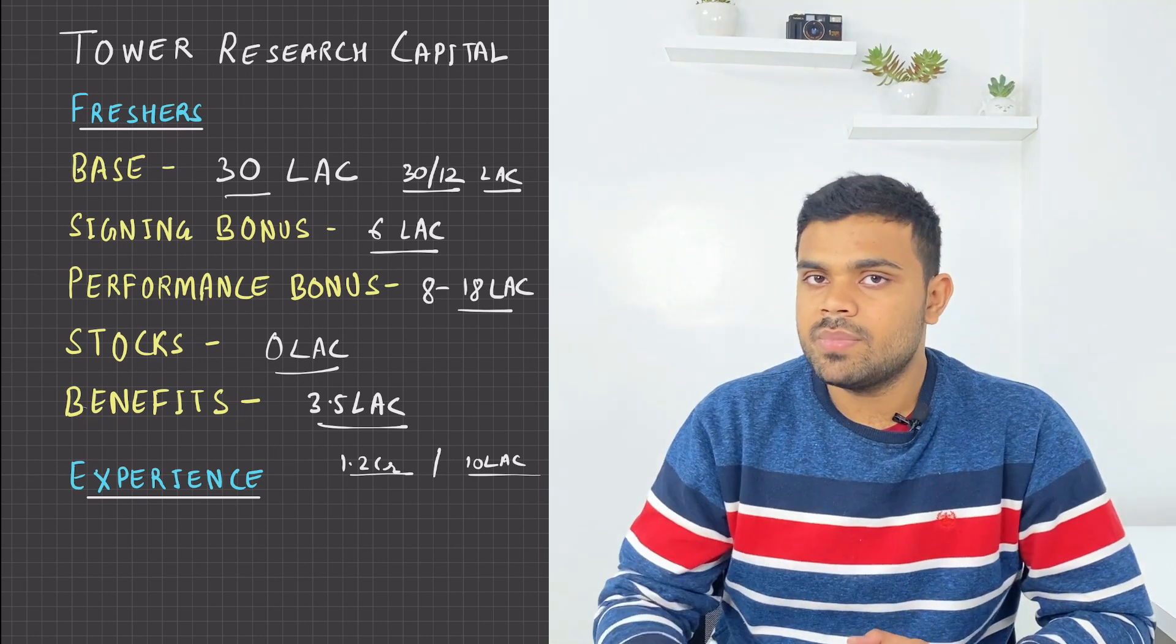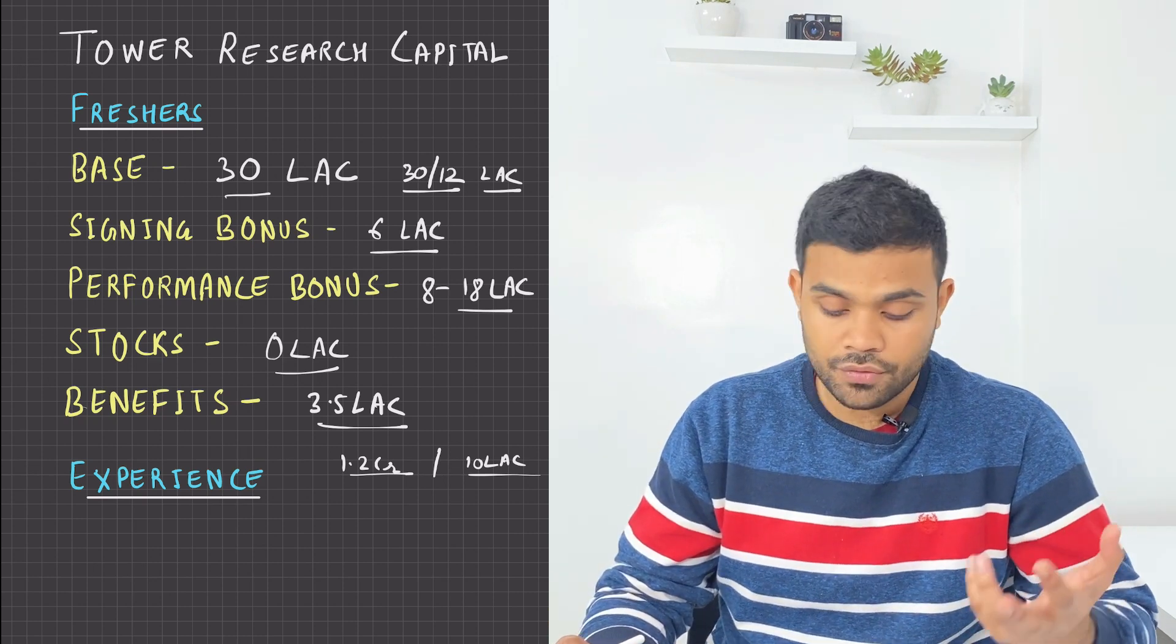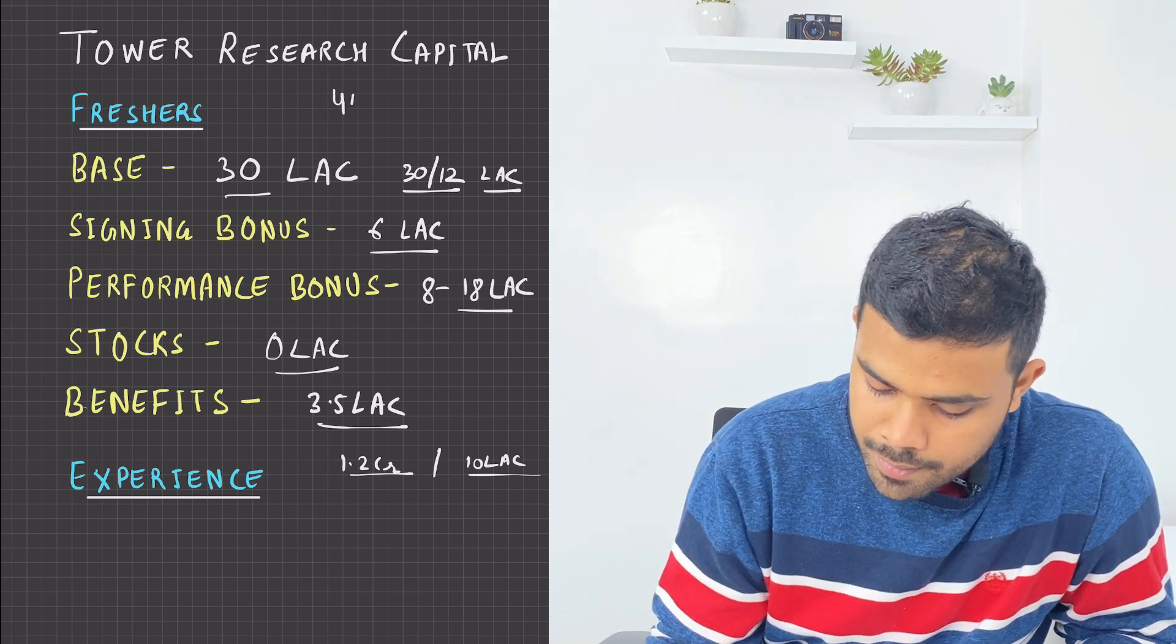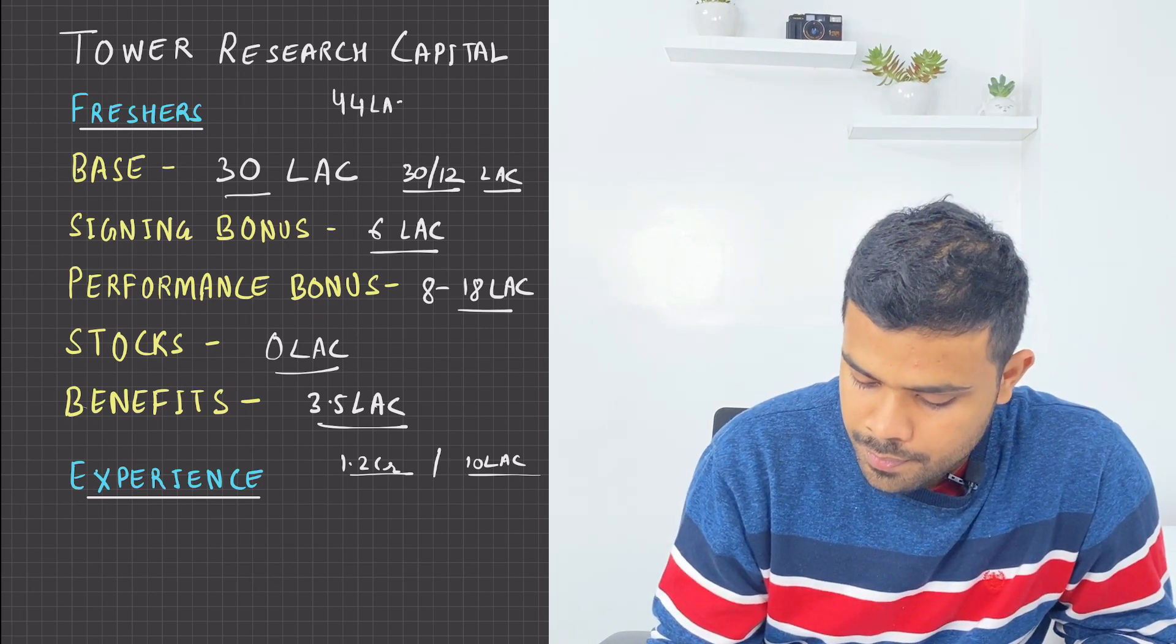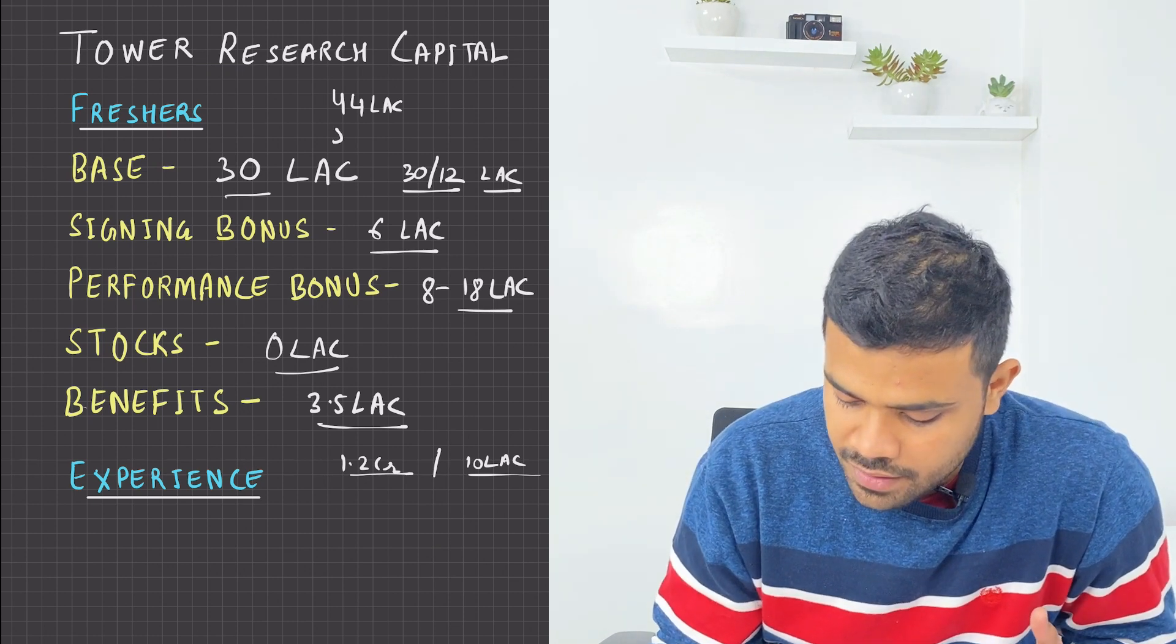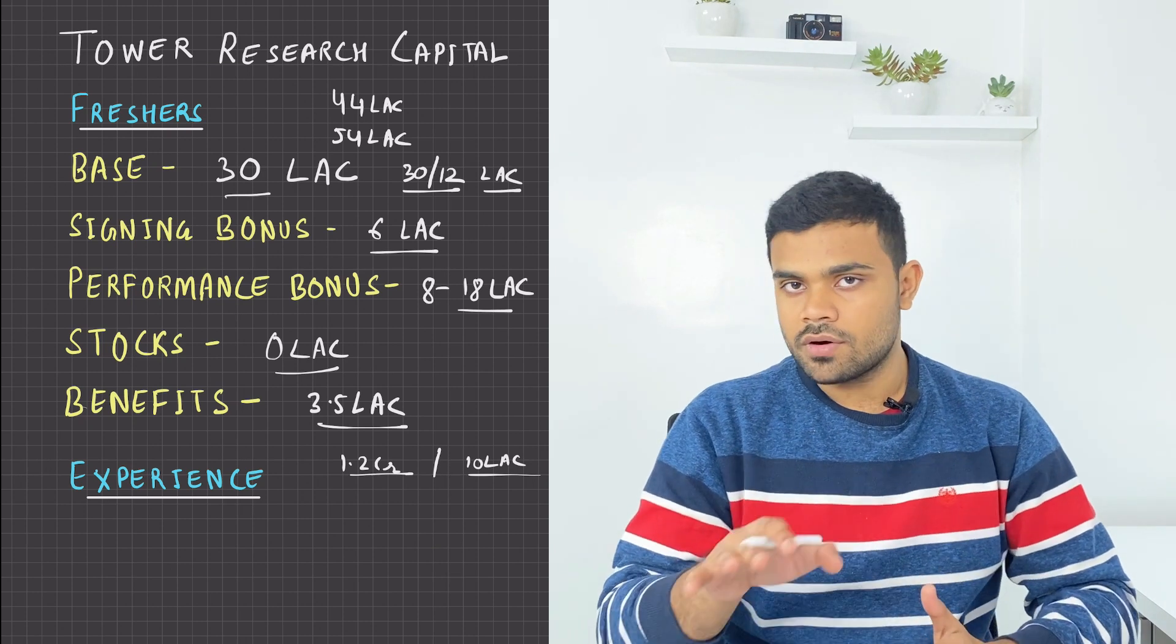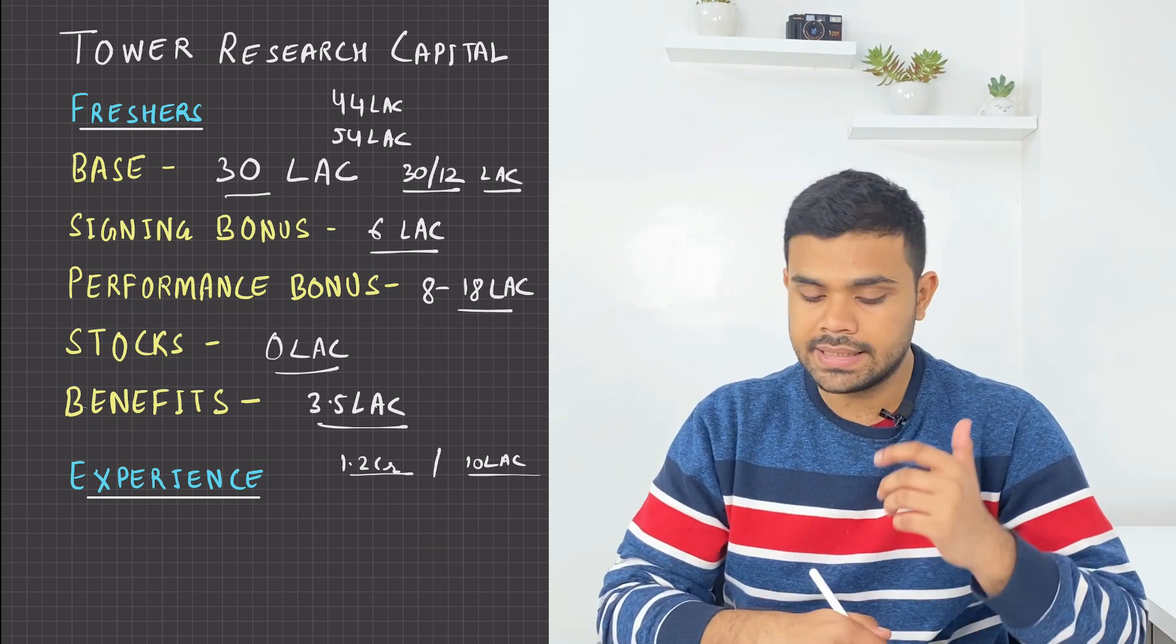So now the minimum CTC - that is 30 plus 6 plus 8, that makes it 44 lakhs minimum. Then its maximum is 30 plus 6 plus 18, which makes it 54 lakhs. So CTC is from 44 to 54 in the first year. This is your CTC.